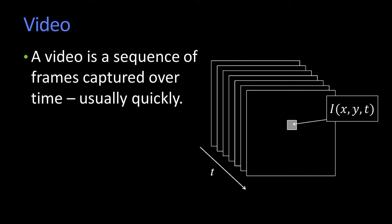A video is a sequence captured over time, usually relatively quickly, so things can't change a whole lot from one sample to the next. It's usually taken at regular intervals, whether it's 30 hertz, 60 hertz, or 24 hertz.